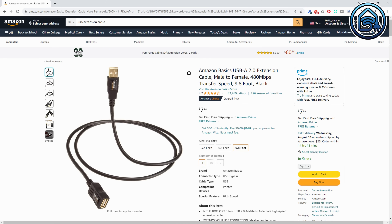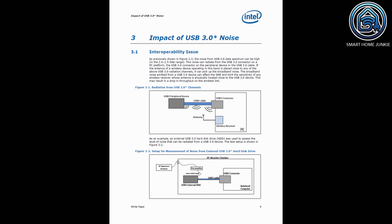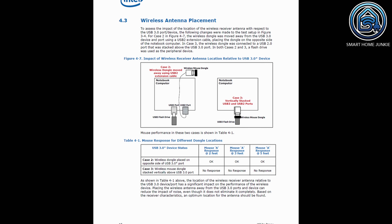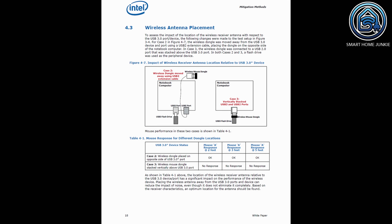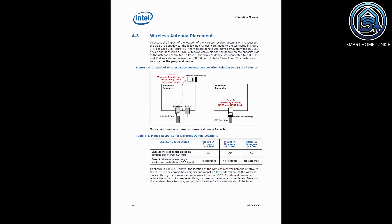One of the most common Zigbee issues is that people cannot connect to their Zigbee dongle at all, or it sometimes connects and sometimes it doesn't. The most important fix is to connect your Zigbee dongle using a USB extension cable. USB 3.0 ports are known to cause significant noise and radio interference to 2.4 GHz wireless devices, interfering with Zigbee and Thread devices. Without a USB extension cable, you can expect issues with pairing, device dropouts, timeouts, and unreachable devices.